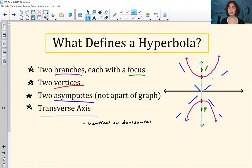And then each one of these is going to have a focus. That's going to be located on the inside of the curve, and we also have two vertices just like a parabola has a vertex. These two branches also each have a vertex.